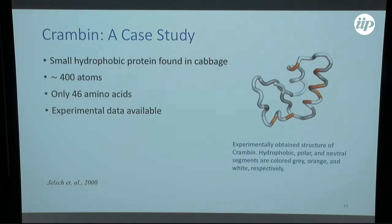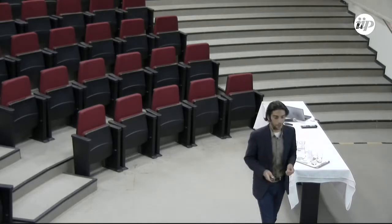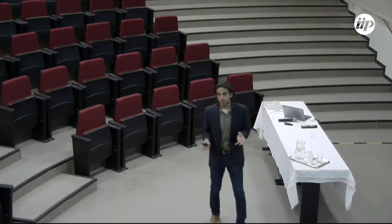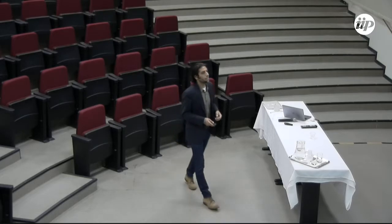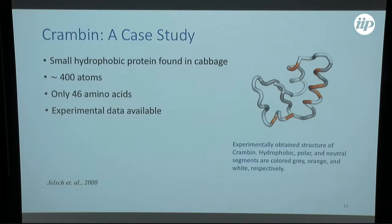The protein I have been looking at is crambin — a small, slightly hydrophobic protein found in cabbage. It's interesting because it's short and relatively easy to model, and there is experimental data. It has about 400 atoms, but only 46 amino acids, which is very short relative to other proteins. The folded structure from X-ray crystallography is shown here with the same color code: the hydrophobic monomer is gray, the neutral monomer is white, and the polar monomer is orange.